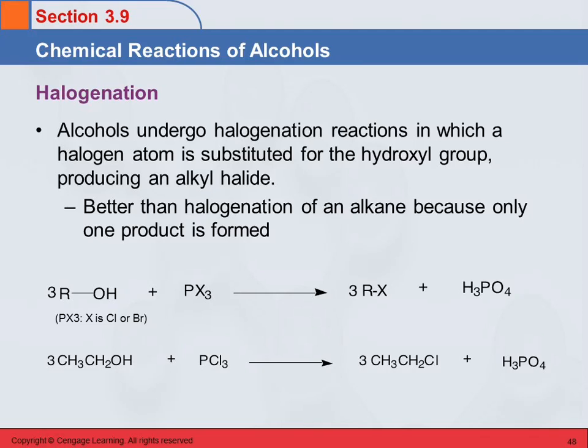What you end up with is an alkyl halide — the same sort of compound we ended up with during hydrohalogenation of an alkene, except now we're only going to get one product. This is a better way to make alkyl halides because you can control what product you make instead of dealing with a mixture.